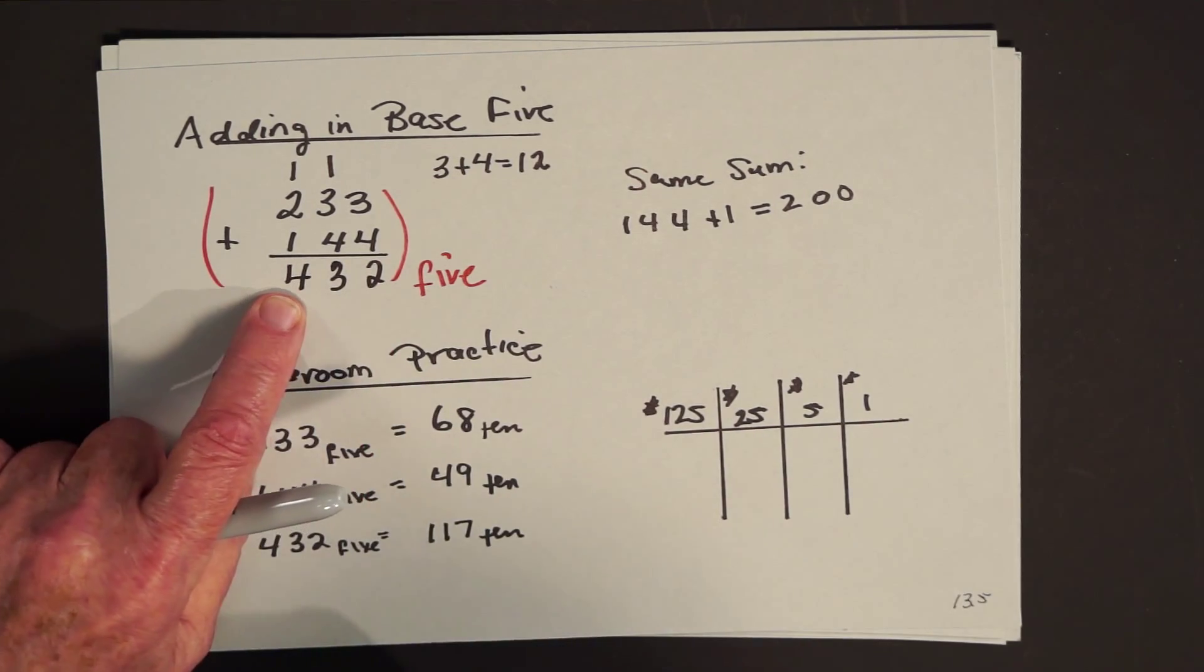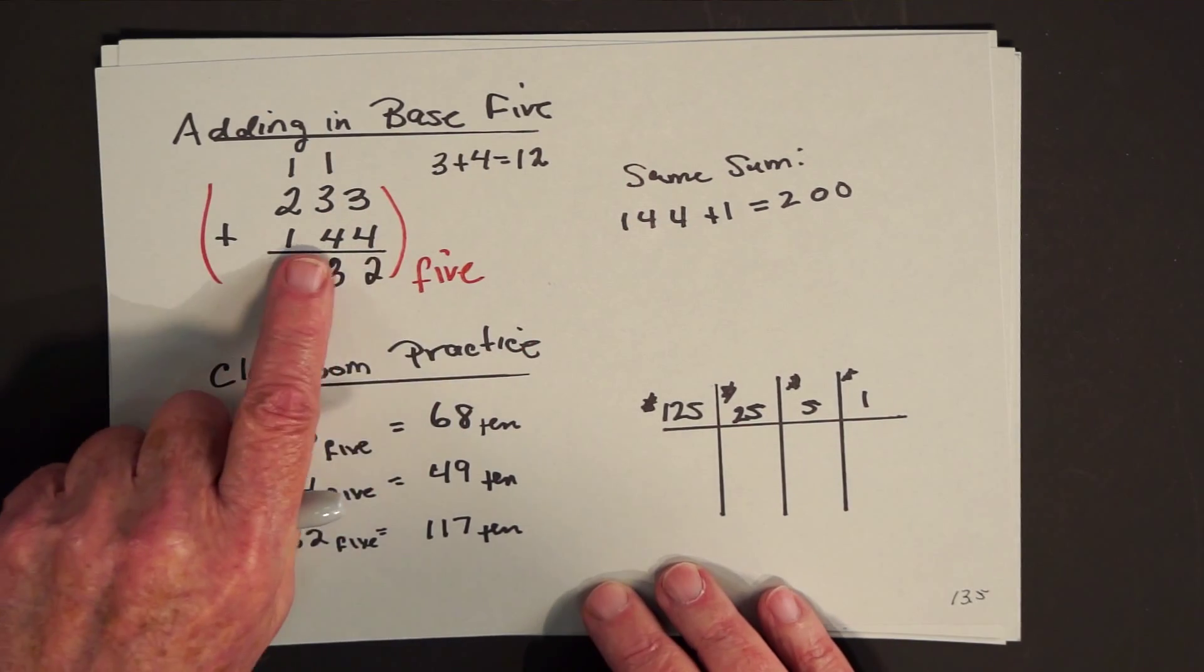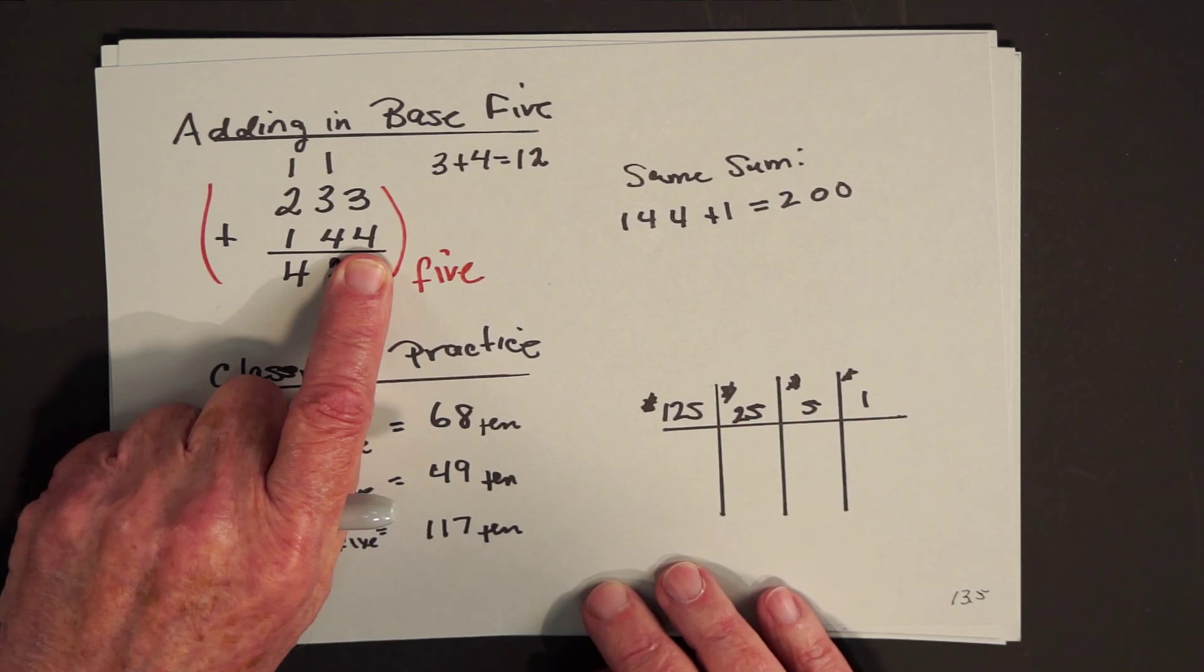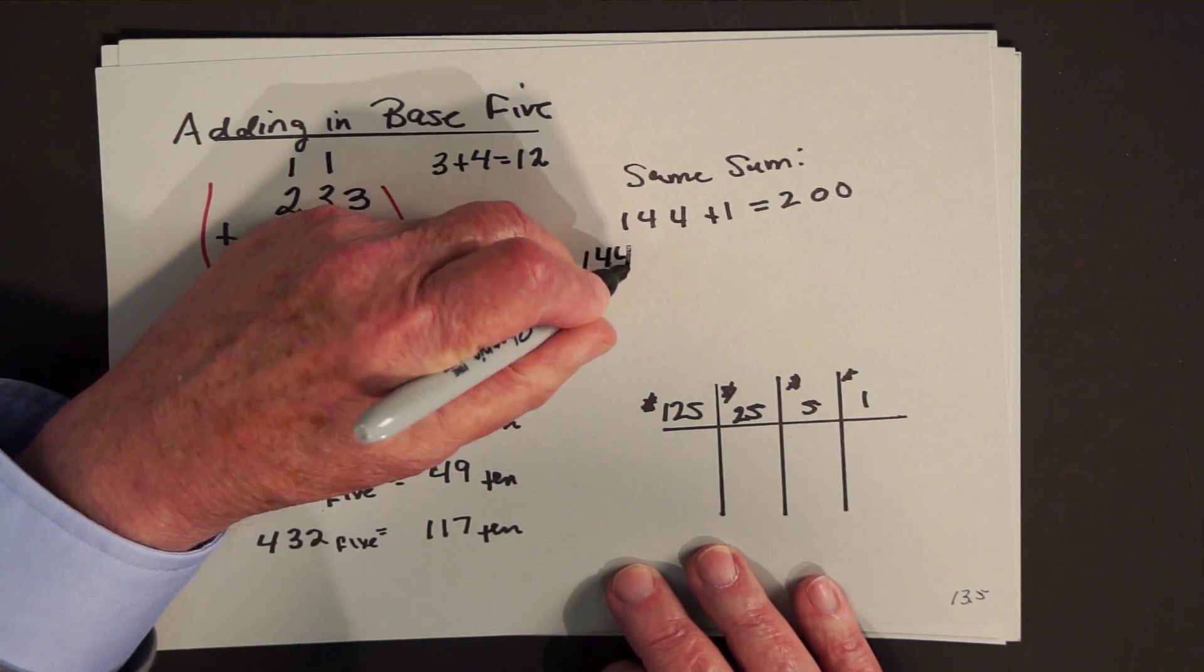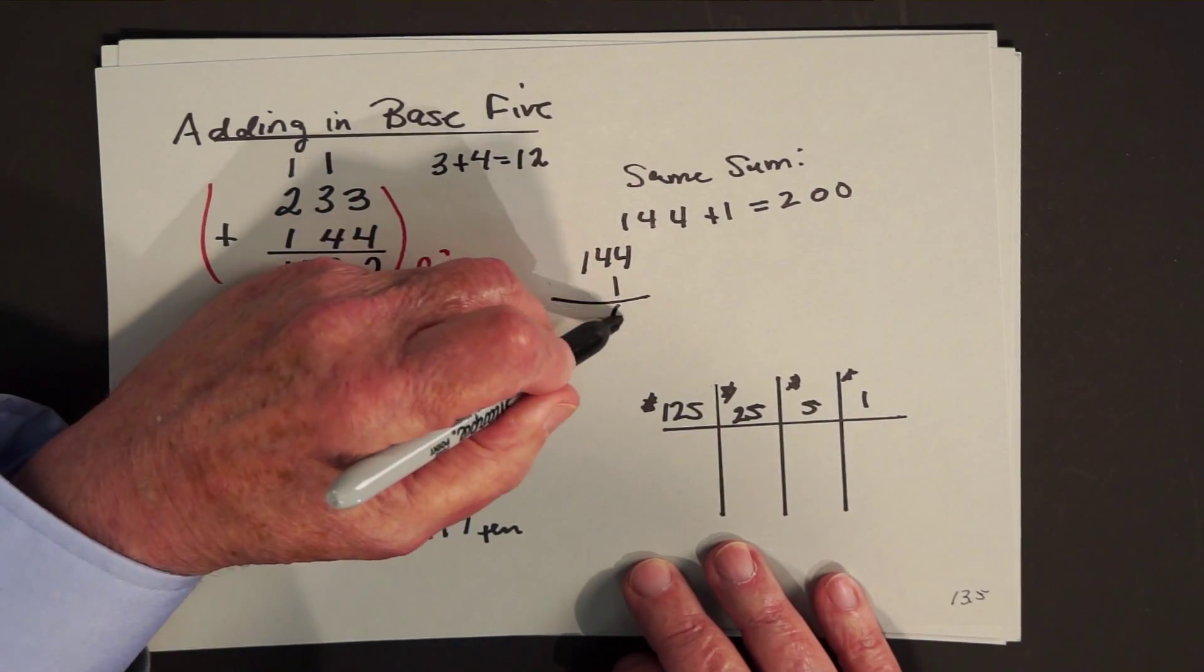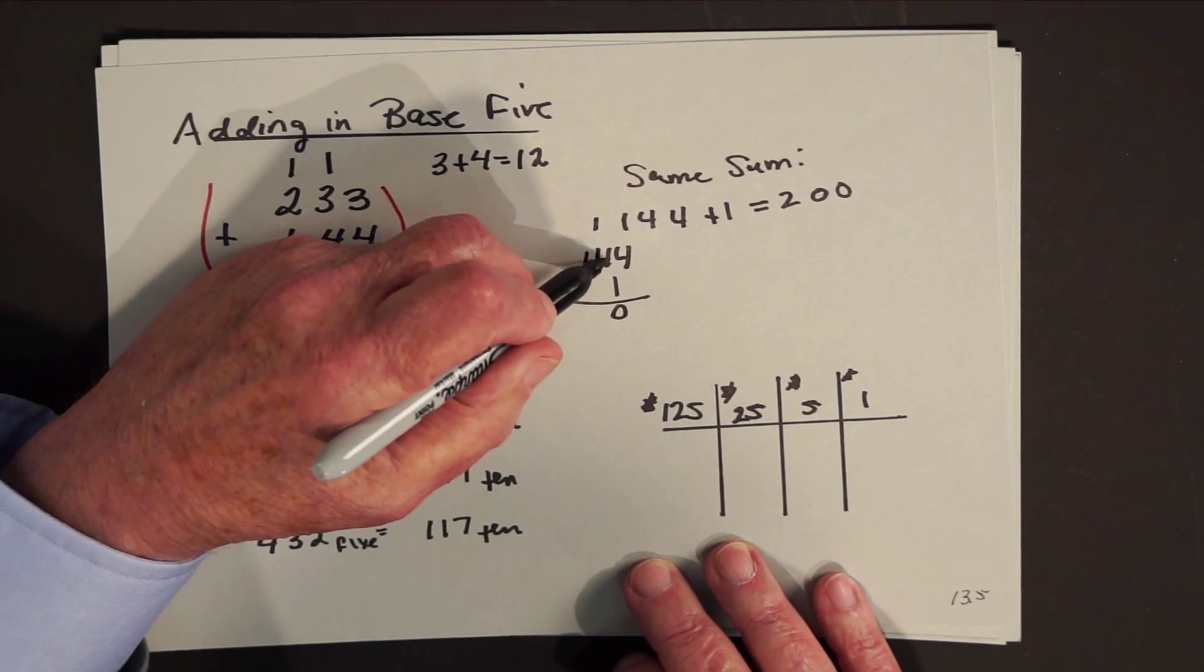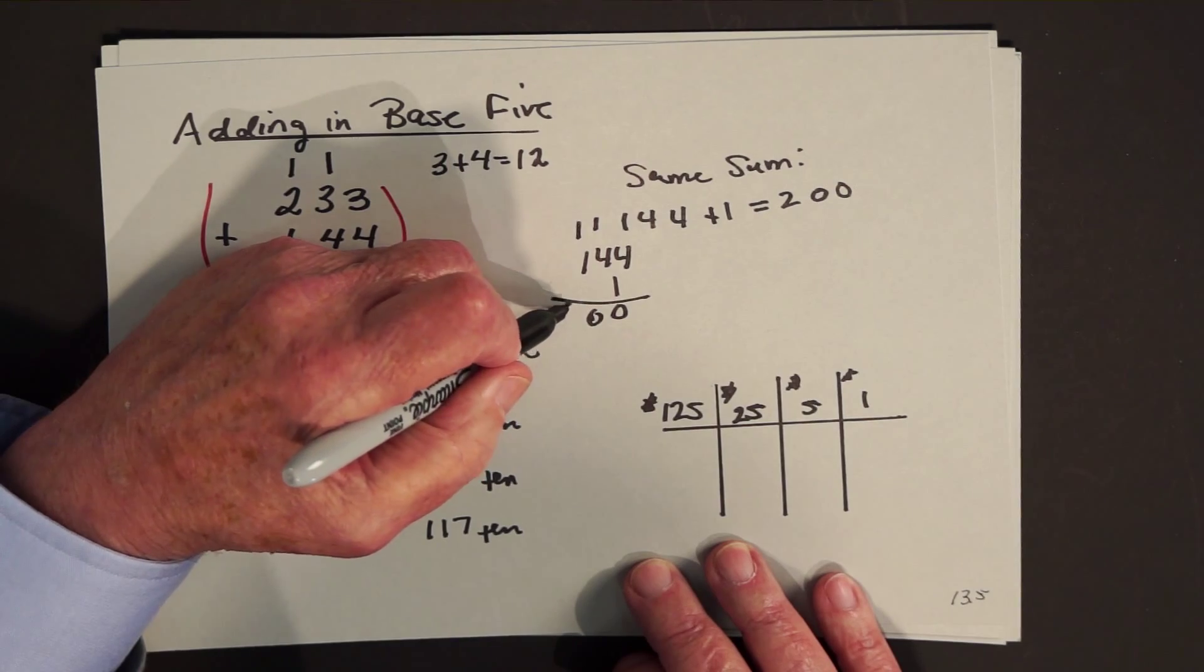This is what the odometer would read after this many miles. By the way, didn't we do something called the same sum problem, where if you add one to one number and subtract one from the other number, the sum stays the same? Same thing happens over here. Look at the one, four, four. This is one less, the four is one less than the trade-in value. If I add one to one, four, four, I say what? One plus four is zero one. Put down the zero, carry the one. Four plus one is zero one. Put down the zero, carry the one. One plus one is two.